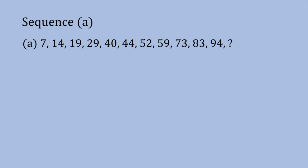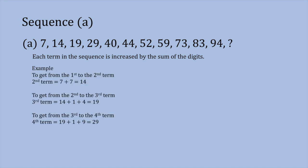With each of these sequences, we need to try and understand what the pattern is between each of the terms. What you should be able to see is that each term in the sequence is increased by the sum of the digits. If we look at a few examples — our first term is 7, and to get to the second term which is 14, we take the first term and increase it by the sum of those digits. The sum of the digits of 7 is 7, so it's 7 add 7 which is 14.